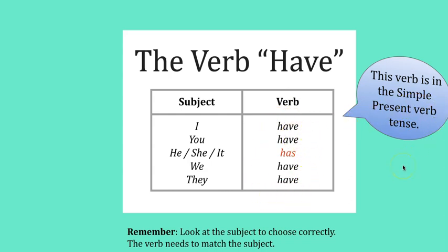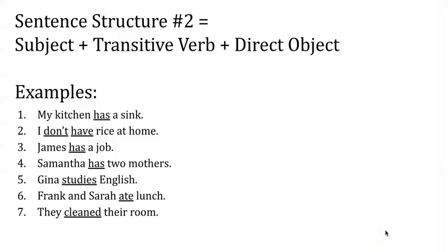You can use 'have' in other tenses — just make sure that when you use the verb it matches your subject. Let's look at some examples of how to use the verb 'have'. The first four sentences use the verb 'have': the subject, the transitive verb, and after the transitive verb we need a direct object.